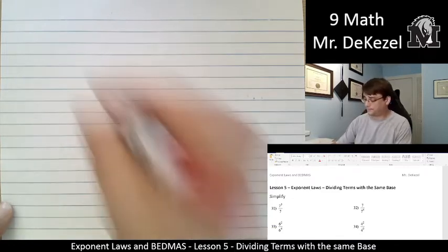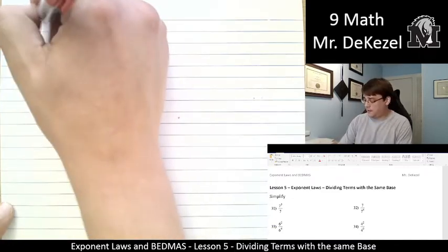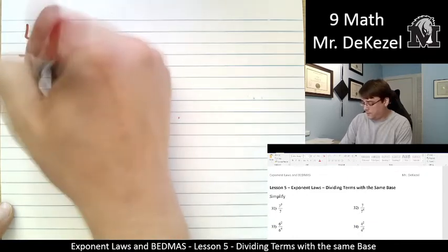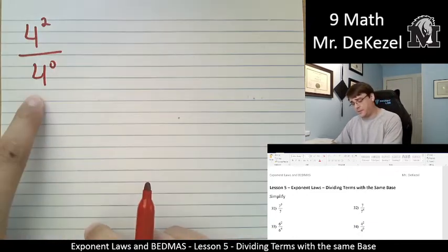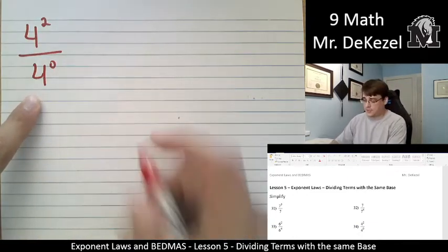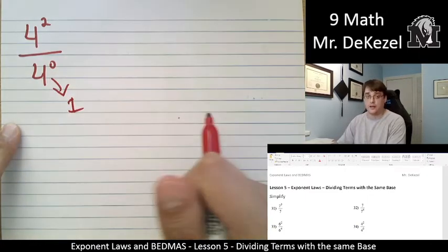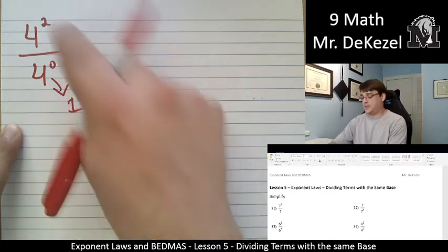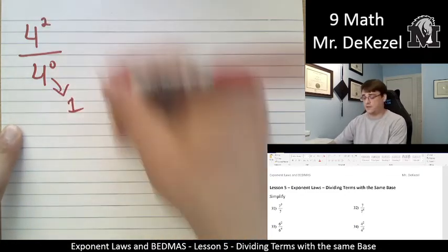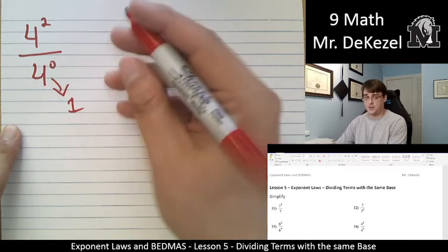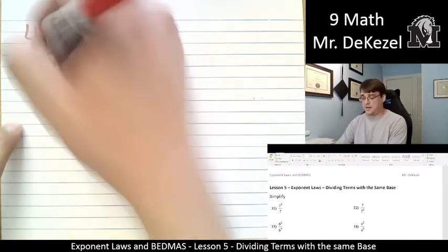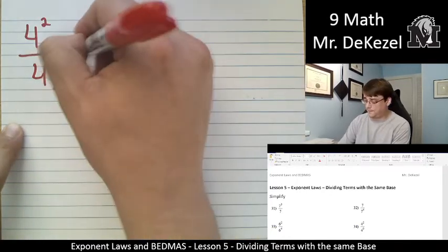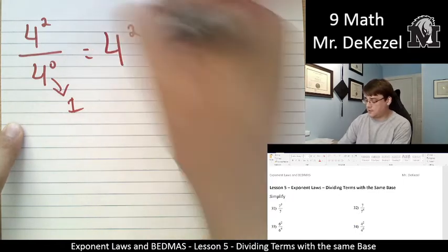Let's do the next one. 4 to the power of 2 over 4 to the power of 0. We know that 4 to the power of 0 is just 1. Anything to the power of 0 is 1. So when we subtract, we expect it to be the same, like 2 minus 0 is 2. And this divided by 1 is going to be the same anyway. So this answer is just 4 squared.